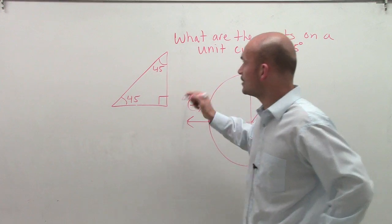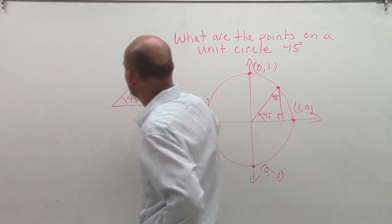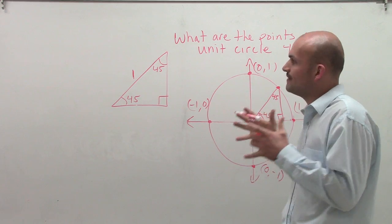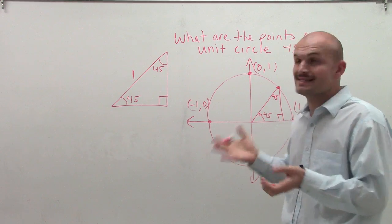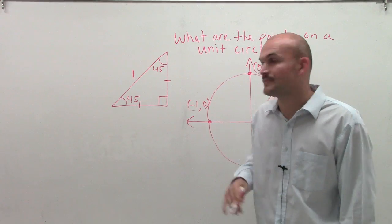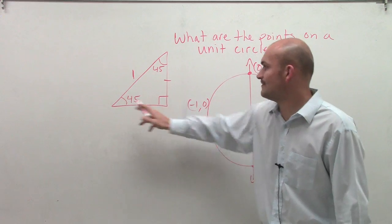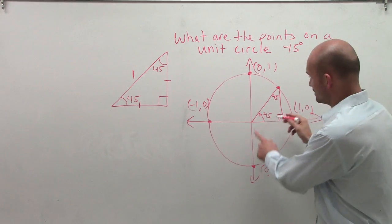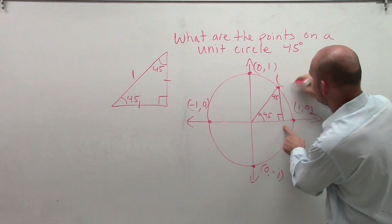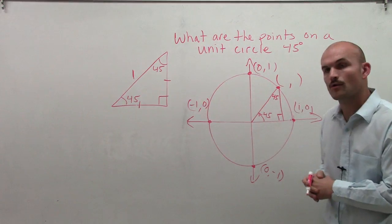For this triangle, we know the radius equals 1. One thing to remember about a 45-45-90 triangle is that it's isosceles, meaning this leg equals this leg. If I find the length of these sides—think about it—the length gives your x-coordinate and the height gives your y-coordinate.